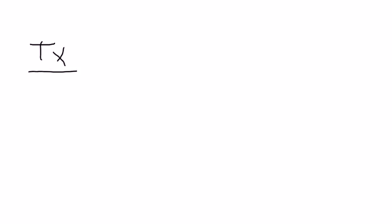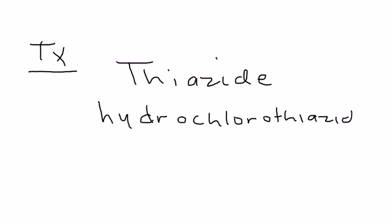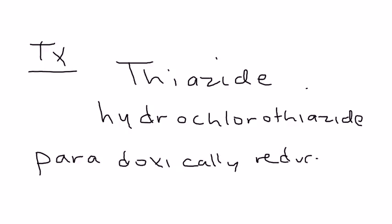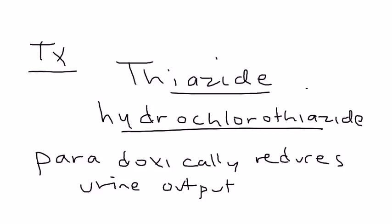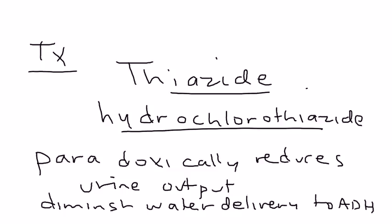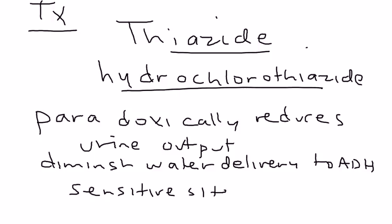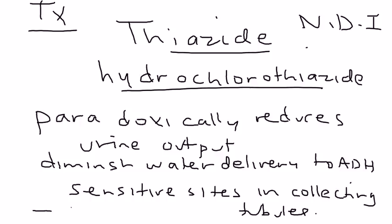So how do you treat NDI? ADH is not useful. It's actually a very interesting treatment — you give a thiazide diuretic, most commonly hydrochlorothiazide. This has a paradoxical effect: it paradoxically reduces urine output, which is the opposite of what you'd expect a diuretic to do. It diminishes water delivery to the ADH-sensitive sites in the collecting tubules. You also put the patient on a low-salt diet. The hope is that this will allow more water to come back into the bloodstream and less water to be lost in the urine.